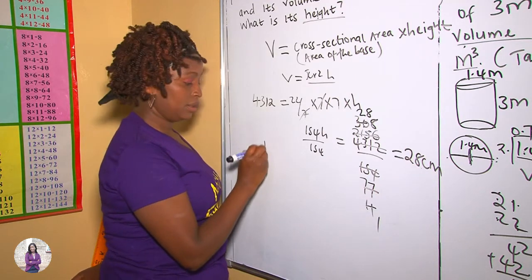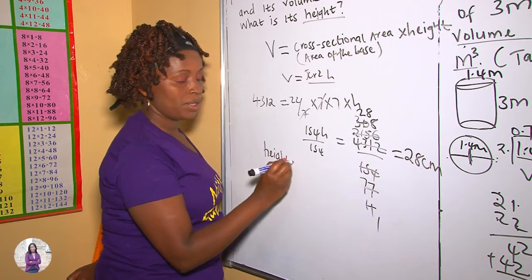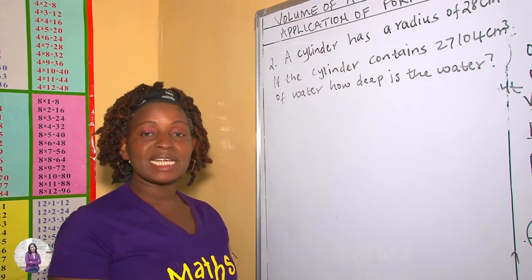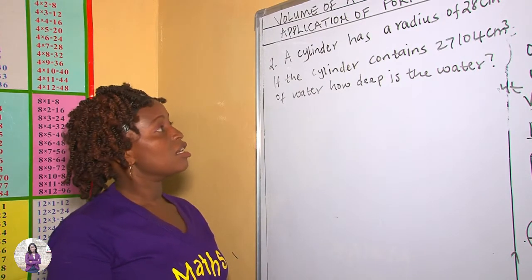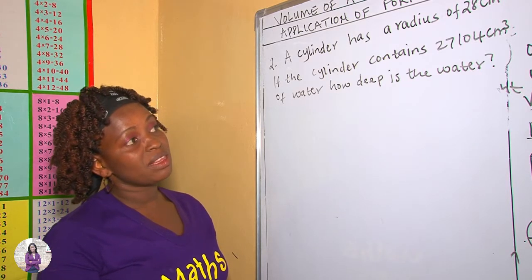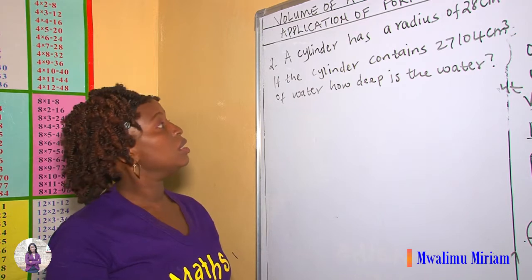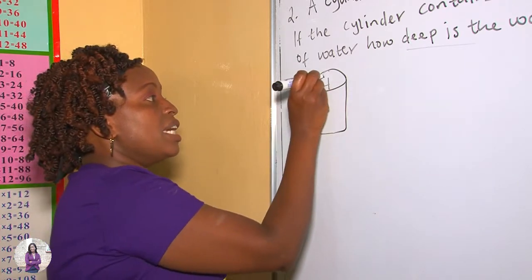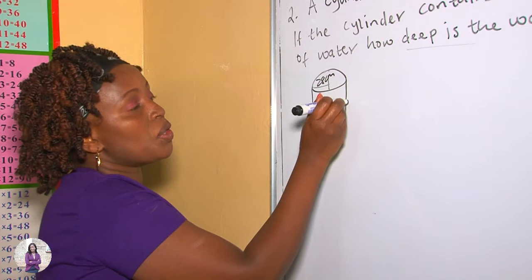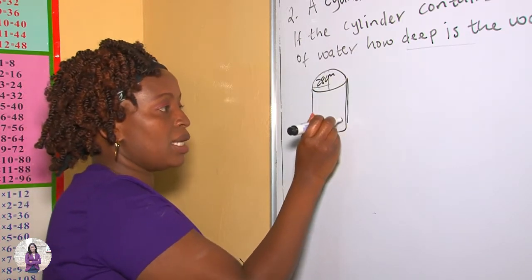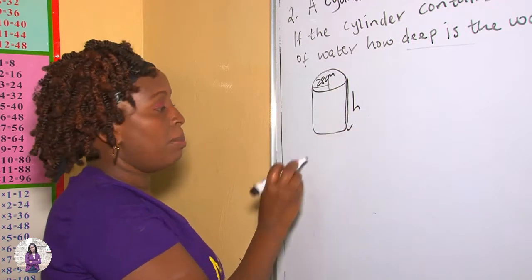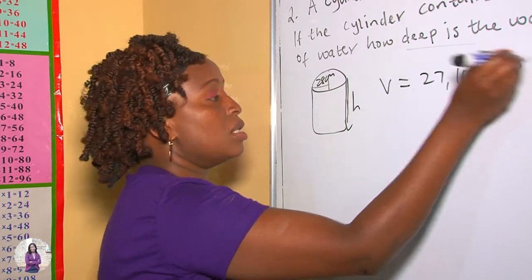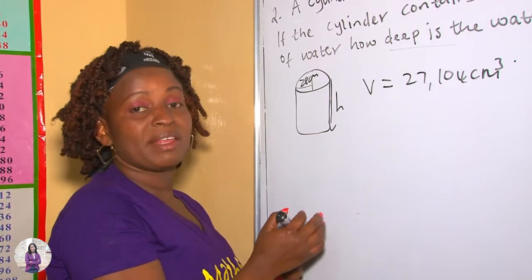Therefore our height is 28 centimeters. Let's do our next example. In our second example we are told that a cylinder has a radius of 28 centimeters. If the cylinder contains 27,104 centimeters cubed of water, how deep is the water? Depth talks about the height, so we are supposed to find the height. The volume is already given as 27,104 centimeters cubed.